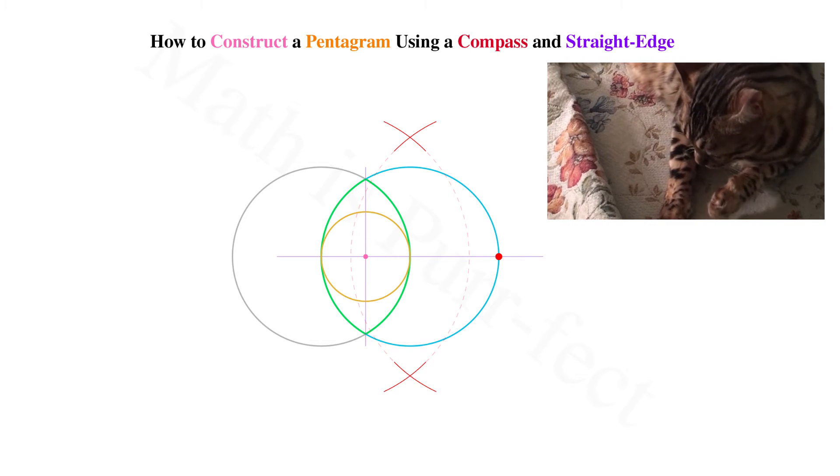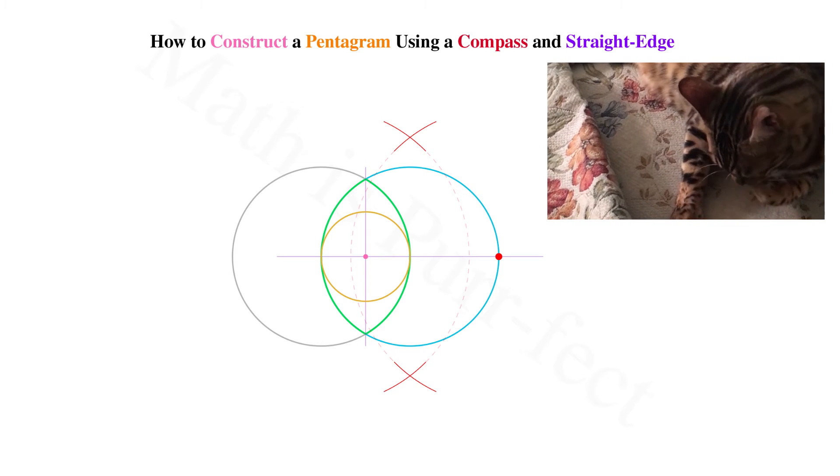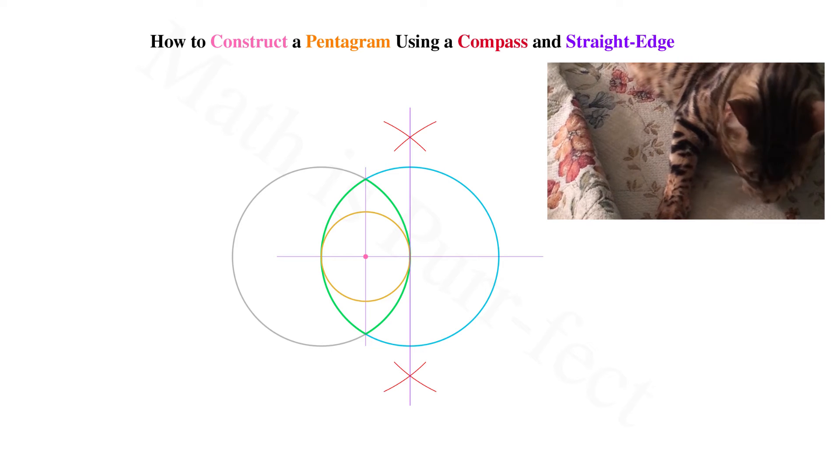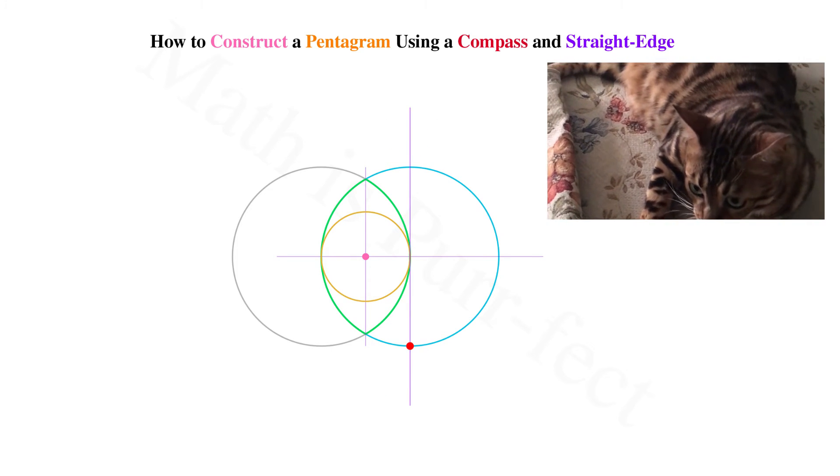Where the two sets of arcs intersect above and below the circle now perfectly bisect our original circle. We draw the line through the arcs and then note where that line intersects the bottom of the original circle, seen here in red.